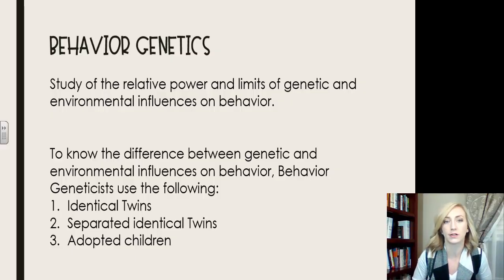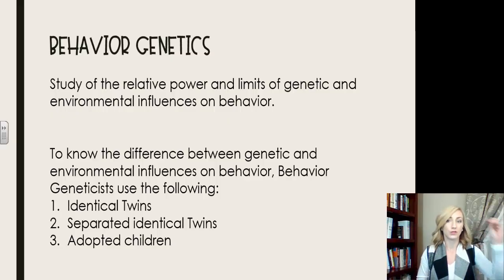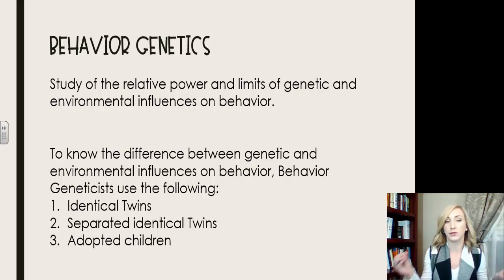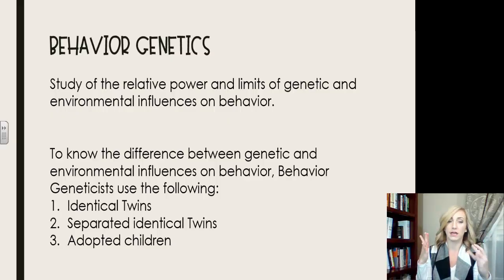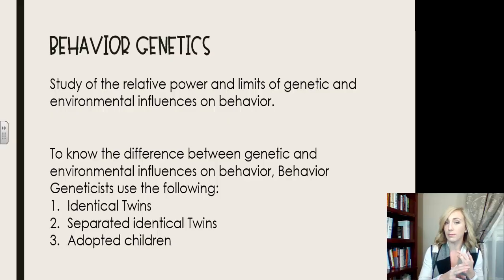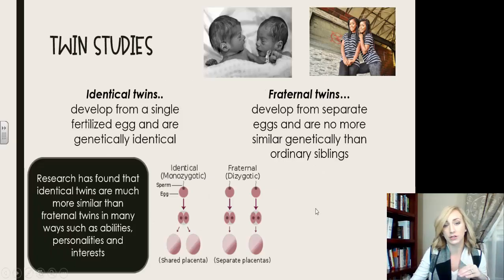Another approach to consider is behavior genetics — the study of the relative power of both genes and environmental influences on behavior, and how those two come together. To know the difference between those two influences, they use studies on identical twins, separated identical twins, and adopted children. You have a section in your notes for each of these.